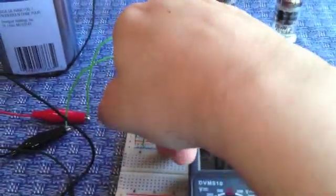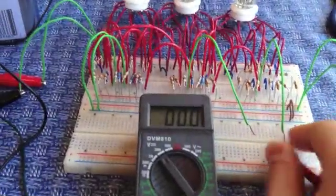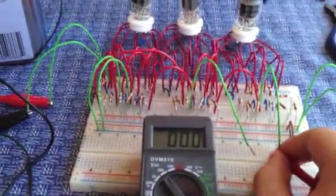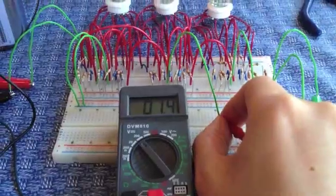Now we can set both inputs to 1, and 1 plus 1 is 2, which is 10 in binary. The less significant bit is a 0, and the more significant bit is a 1.